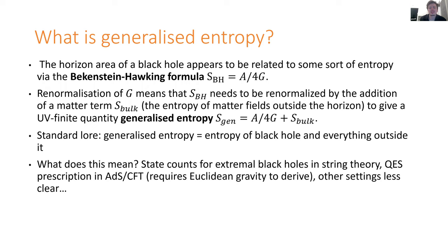So what does this actually mean? There are various contexts where we can make it pretty precise. For extremal black holes in string theory, we have literal integer counts of states that can be computed on the string theory side and using the gravity path integral, which gives A over four G plus corrections. In AdS-CFT, we have the QES prescription — the Ryu-Takayanagi formula — that says the entanglement entropy of some boundary region is given by the generalized entropy of a dual bulk region. We can derive that, but only using Euclidean gravity path integrals, which are a sort of black magic from a canonically quantized gravity point of view.